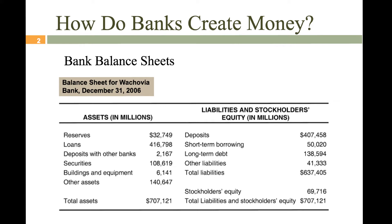There is a certain amount of reserves a bank is required to have, and that's called required reserves. You're not going to see required reserves on the balance sheet, but it's something you can calculate. It's basically the reserves a bank has to have on hold, either in their vault or at the Fed — required by law, by the Federal Reserve — and it is a certain percentage of the deposits that they have in their accounts.